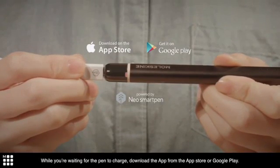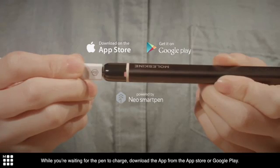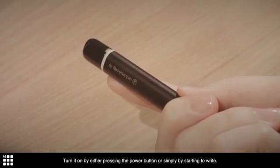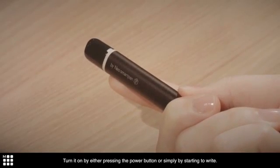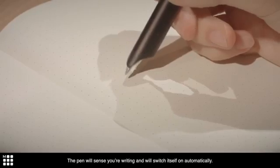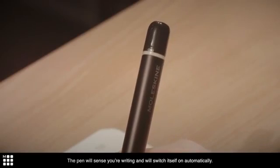While you're waiting for the pen to charge, download the app from the App Store or Google Play. Once the pen is charged, you can turn it on by either pressing the power button or simply by starting to write. The pen will sense your writing and will switch itself on automatically.